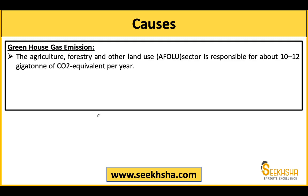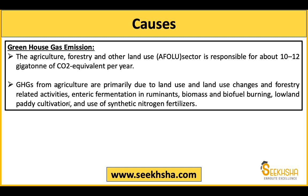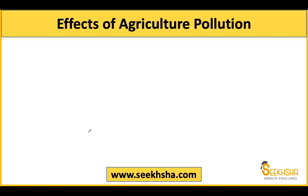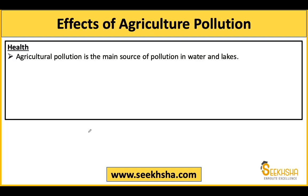Greenhouse gas emissions from agriculture, forestry, and land use account for around 10 to 12% of CO2 equivalent per year. Greenhouse gas emissions from agriculture mainly come from land use, deforestation, fermentation in ruminants, biomass and biofuel burning, paddy cultivation — like the stubble burning problem in North India and Delhi's national capital region — and synthetic nitrogen fertilizer, which releases a large amount of nitrogen gas into the atmosphere, a type of greenhouse gas.